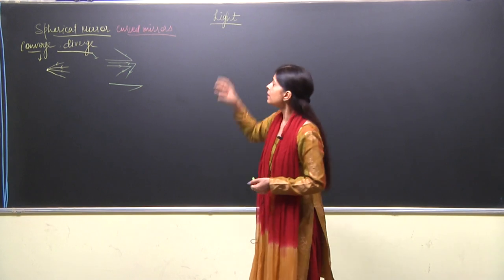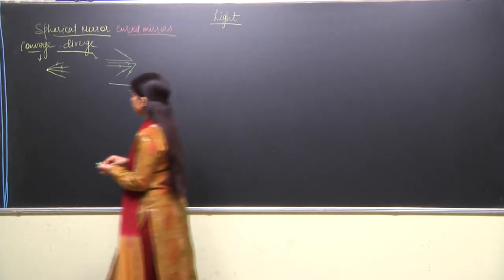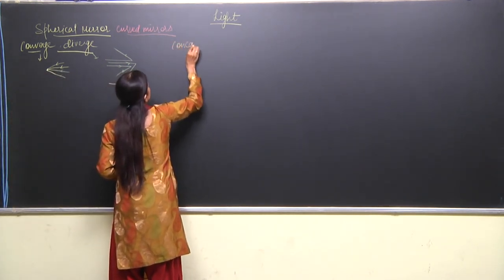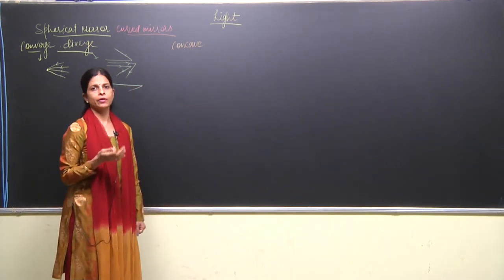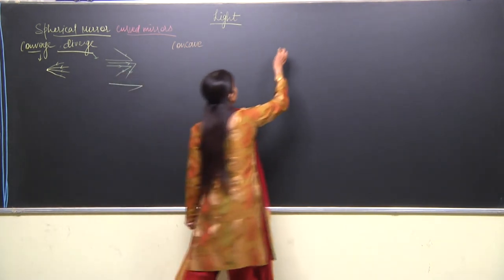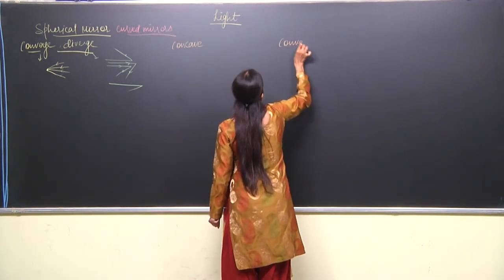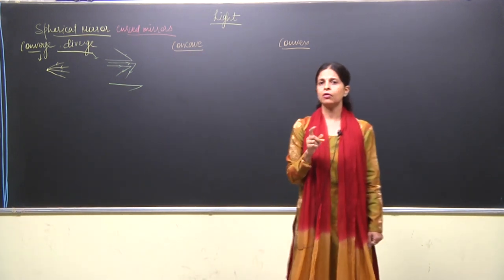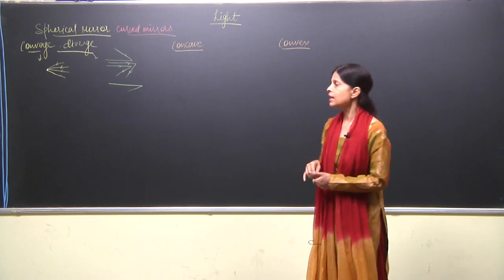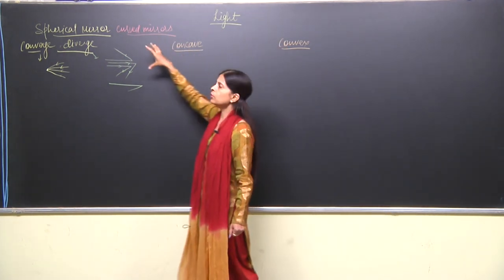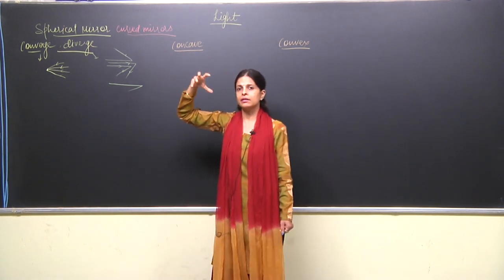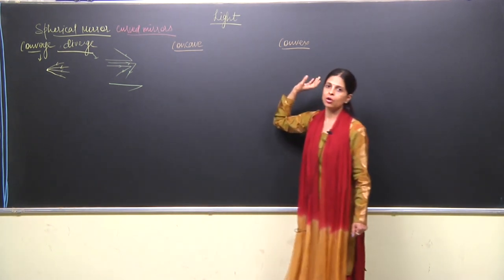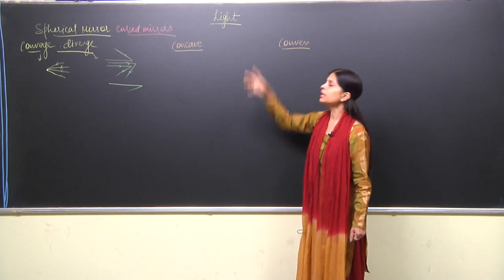Now we will talk about the types of spherical mirrors. Spherical mirrors can be of two types: concave and convex. So concave mirror and convex mirror — when we talk about the types of spherical mirrors, we include concave and convex mirror. First of all, what is the meaning of spherical mirror?